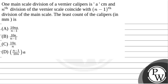Hello. Let's read the question. The question says that one main scale division of a Vernier calipers is A centimeter, and the nth division of the Vernier scale coincides with the (n-1)th division of the main scale. The least count of the calipers in mm is to be found.